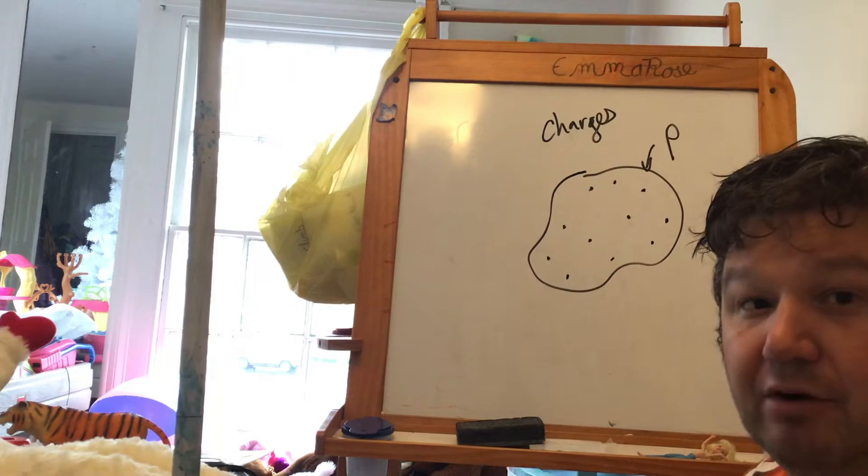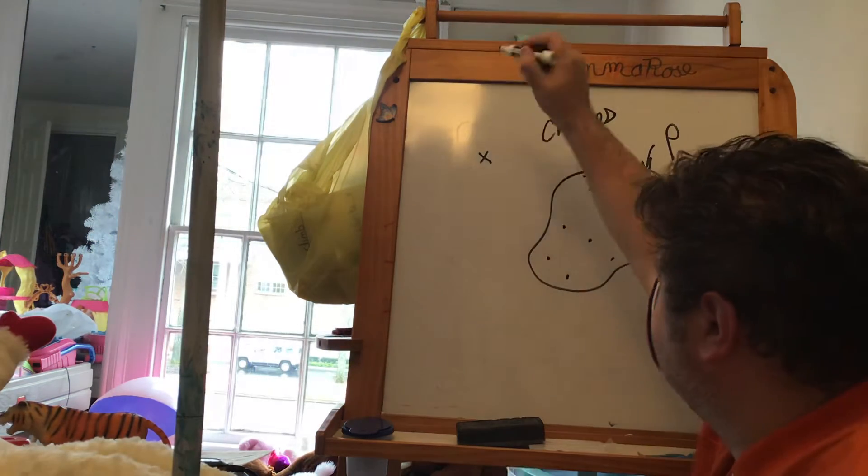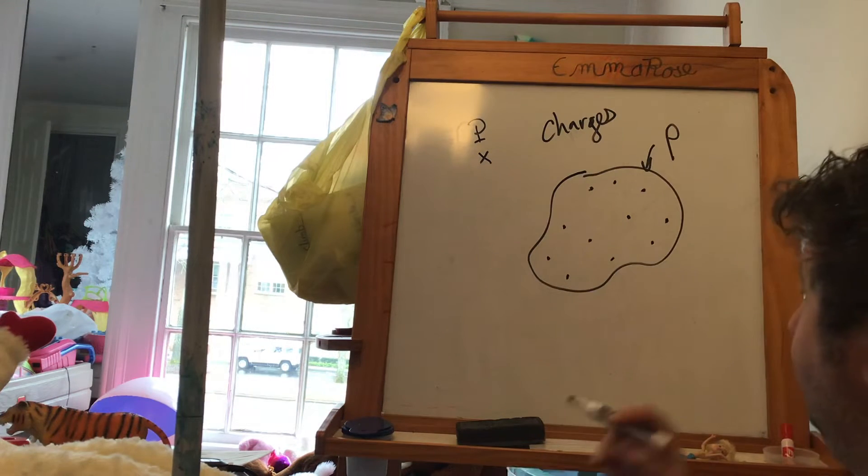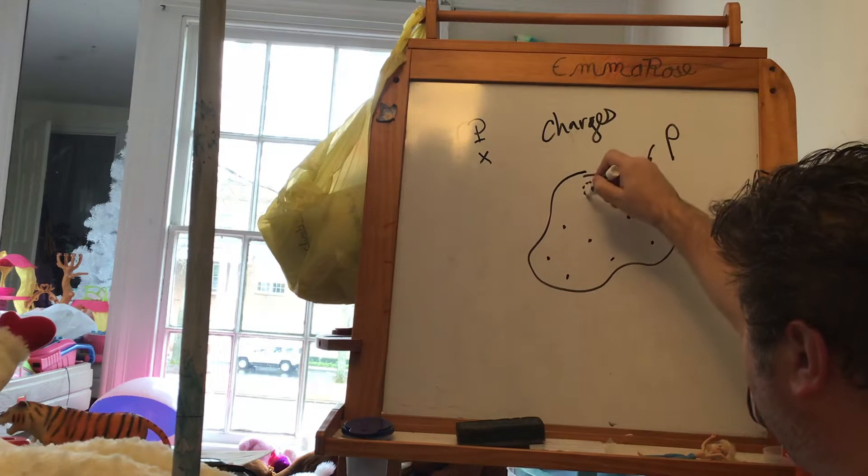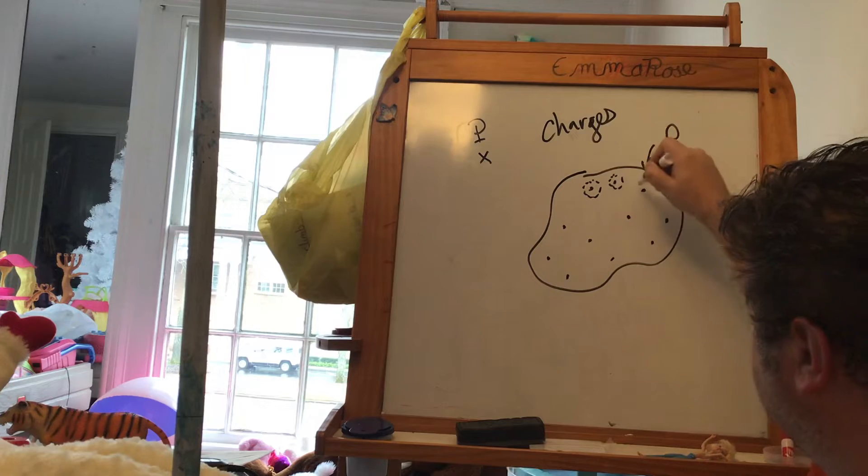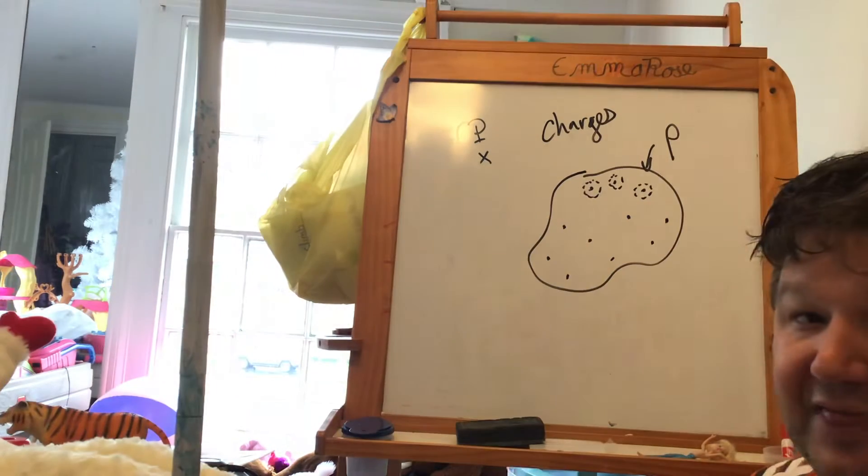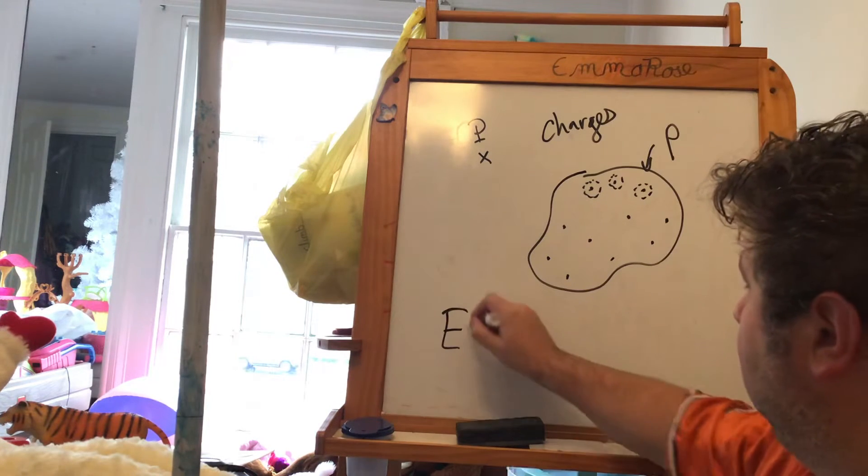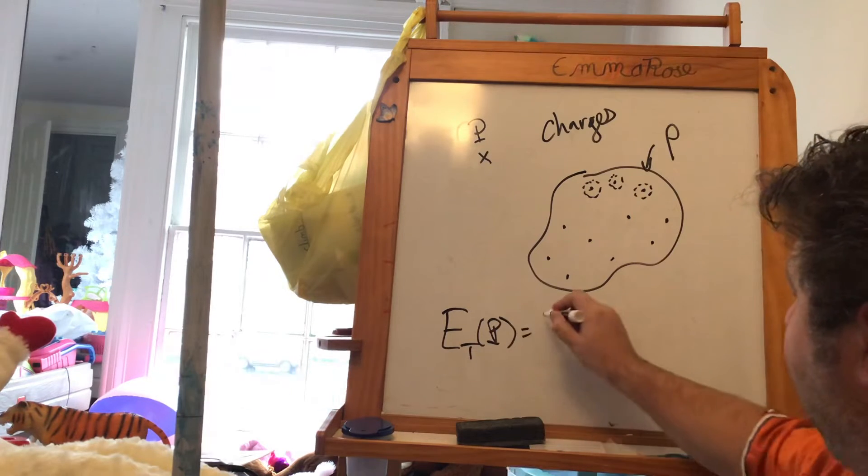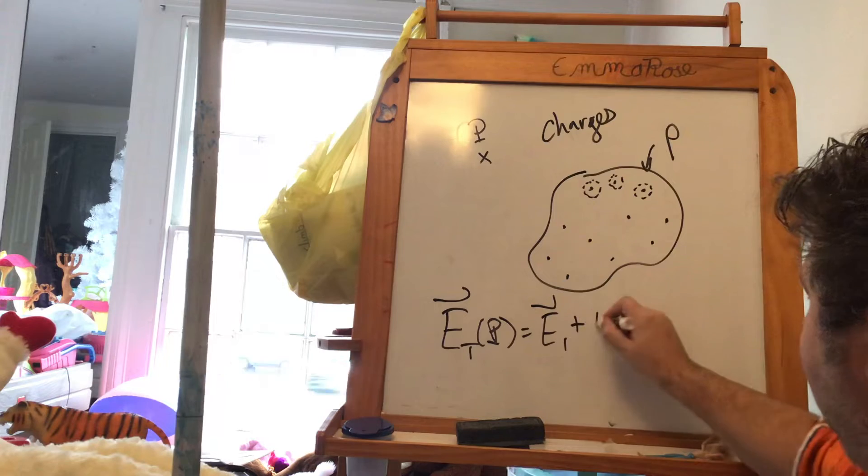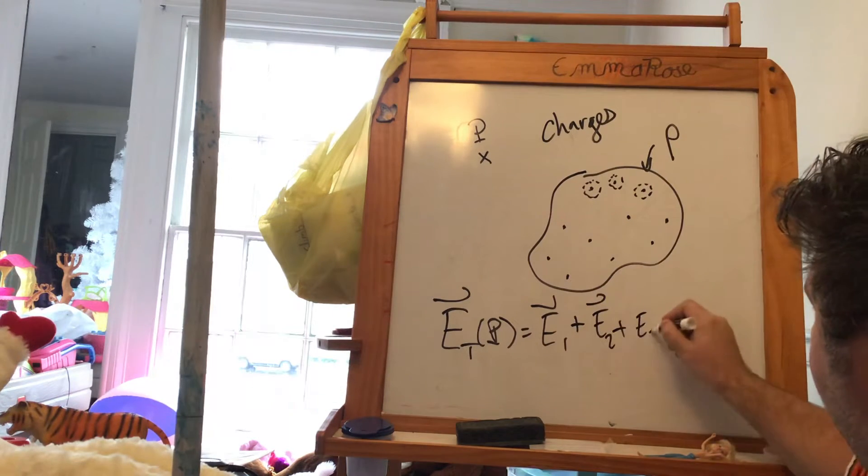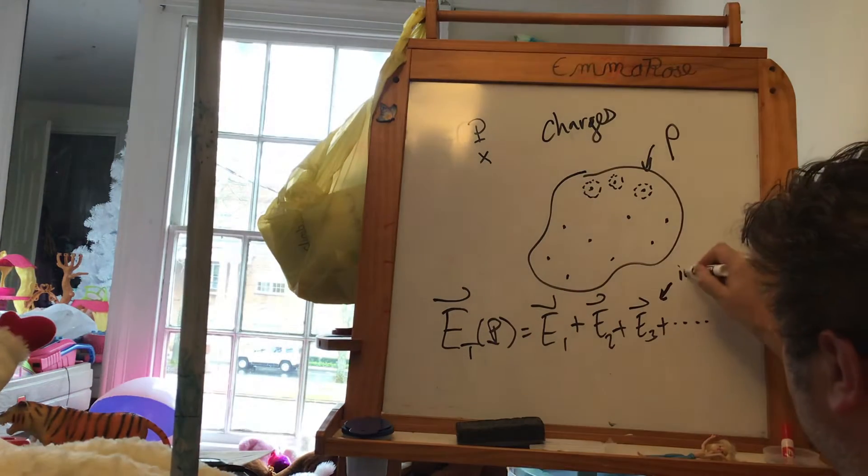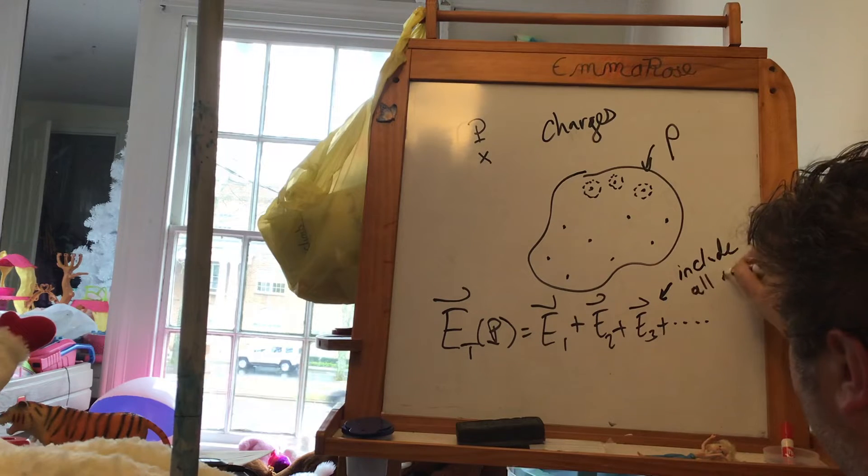And so if I care about the electric field at this point, point P, then what I could do is find the electric field from this charge, find the electric field from that charge, and add them up. We call that the principle of superposition. That E total at point P is equal to E1 plus E2 plus E3, where I include all my charges.